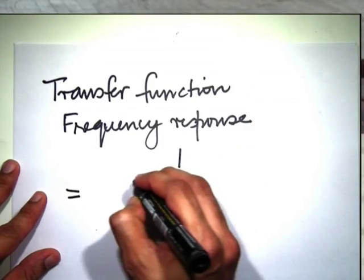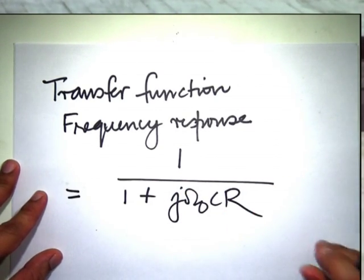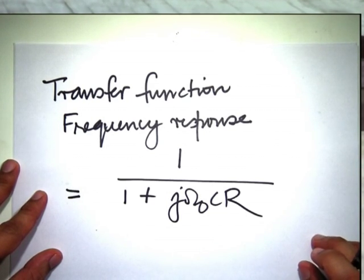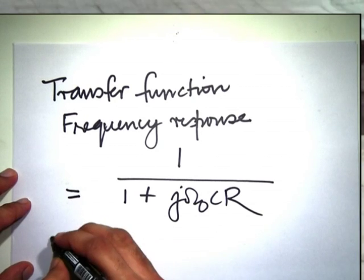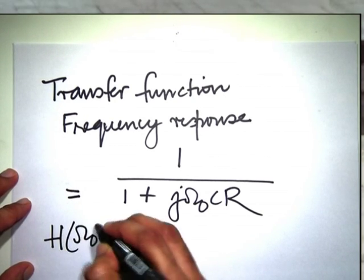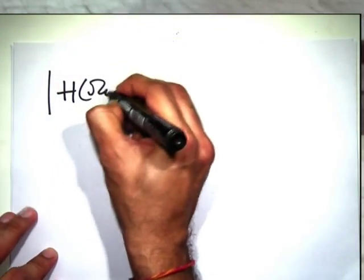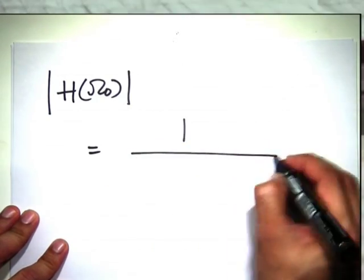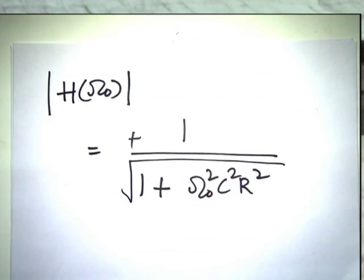The frequency response H(ω₀) = 1/(1 + j·ω₀·CR) is a complex number. The magnitude |H(ω₀)| = 1/√(1 + ω₀²·C²·R²). Let us plot this as a function of ω₀. The physical situation: I have the resistance and capacitance in series, I apply a sinusoidal input with fixed amplitude, and vary the frequency knob to see how the output amplitude changes as a function of frequency.